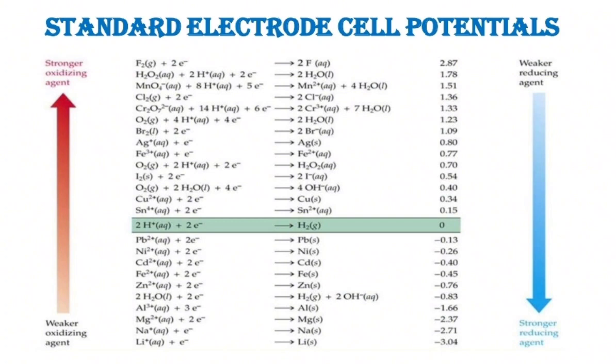This is the table of standard electrode cell potentials. I will take an example of a process and we will discuss if this process is spontaneous or not. So how to identify if a process is spontaneous or non-spontaneous applying gamma rule? Let's see.